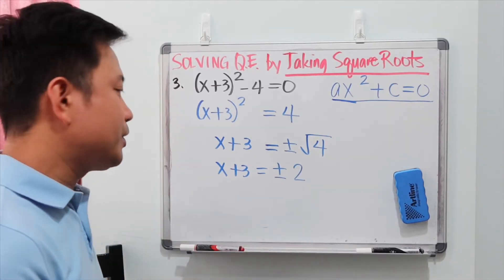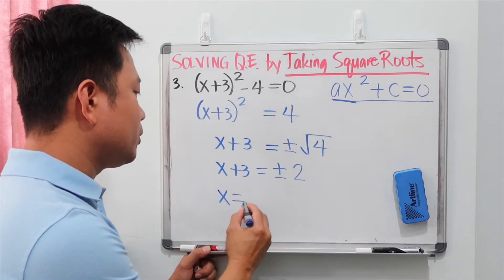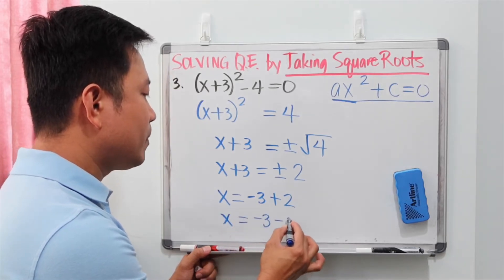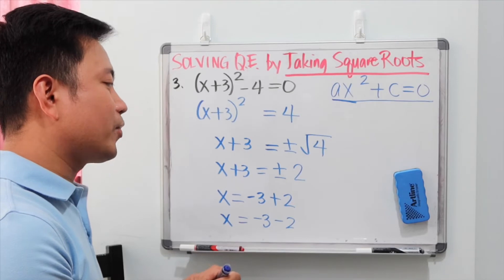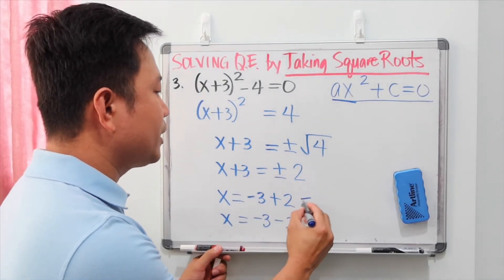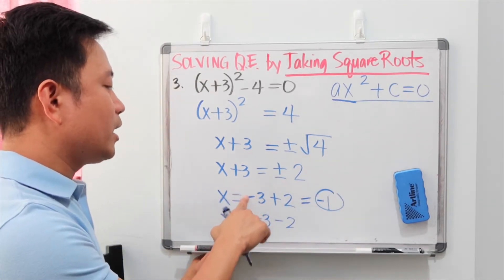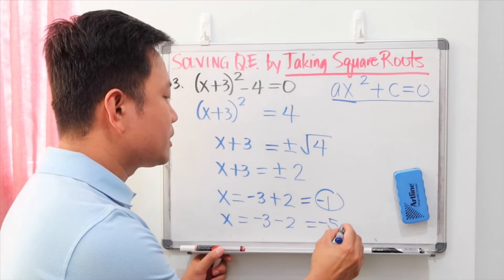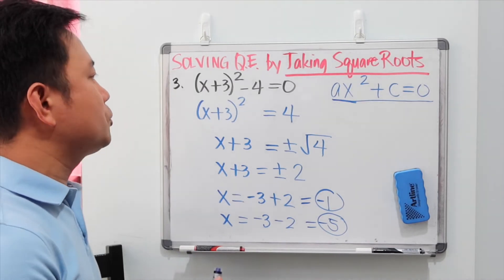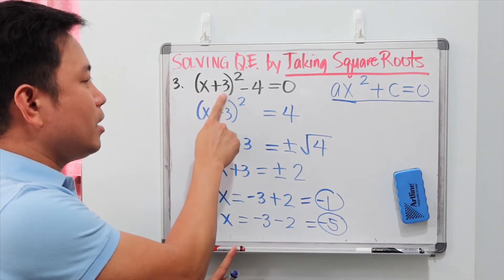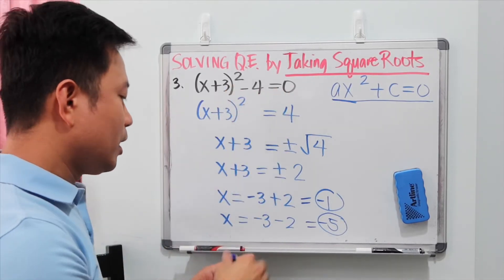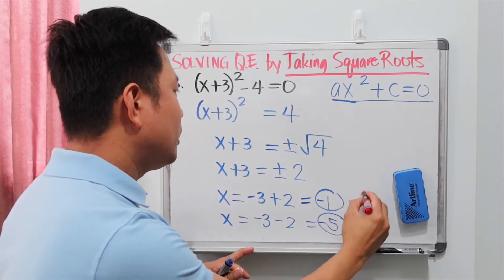We get two values of x by subtracting 3 from both sides. The first value is x equals negative 3 plus 2, which is negative 1. The second is x equals negative 3 minus 2. We can verify: plugging in negative 1, we get negative 1 plus 3 equals 2, squared is 4, minus 4 equals 0. That's true, so negative 1 satisfies the equation.